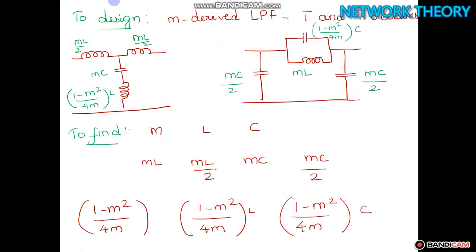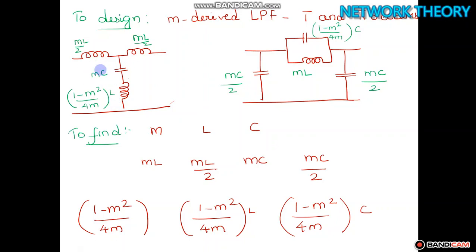First, draw the M-derived low-pass filter sections for both T and pi. In the T section, the series arms each have an inductance of mL/2, and the shunt arm is a resonant circuit containing a capacitor mC in series with an inductance of (1 - m²/4m)·L. This is a capacitance and inductance combination.